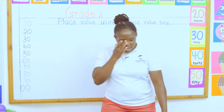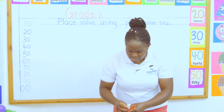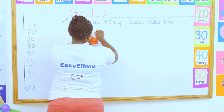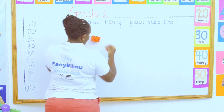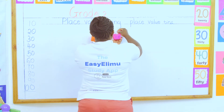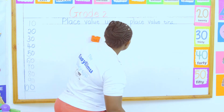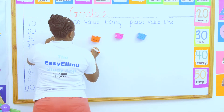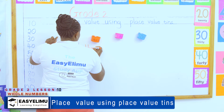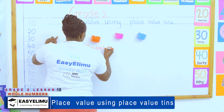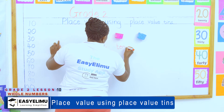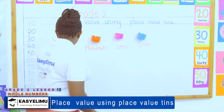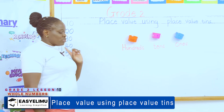Let me show you on the place value chart. Because we now have 100, we increase the place value columns. We now have three columns on the board: hundreds, tens, and ones. So when I am told to represent the number 100 using the place value chart, I have three boxes — ones, tens, and hundreds.